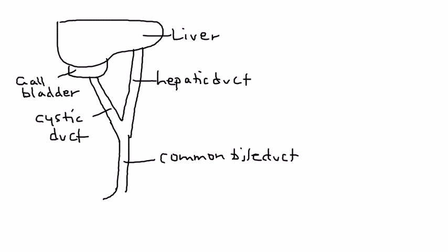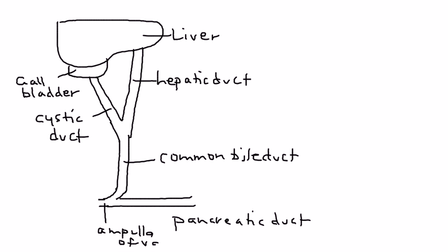Now the common bile duct joins with one final duct here, known as the pancreatic duct, and together they form this duct known as the ampulla of Vater. That opens up into the intestine, but in particular the part of the intestine known as the duodenum.